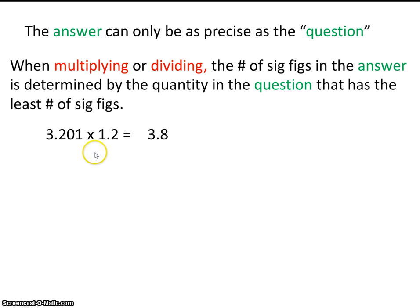So when multiplying or dividing, the number of sig figs in the answer, you can see this has 2 sig figs, is determined by the quantity in the question, so by one of these, that has the least number of sig figs. You can see that this number has 4 sig figs, and this number here has 2 sig figs. So the fact that this number has 2 sig figs limits us to an answer with 2 sig figs.